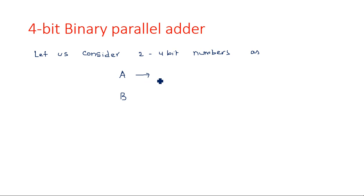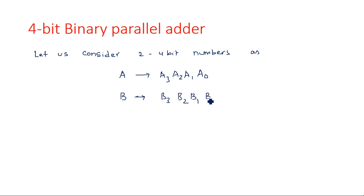How can you say it is a 4-bit number? It consists of 4 bits inside: A0, A1, A2, A3. Similarly, B is also having B3, B2, B1, B0. Internally, A is having 4 bits A0 to A3 and similarly B is also having B0 to B3. That is why it is a 4-bit number. Such two 4-bit numbers A and B I am taking.